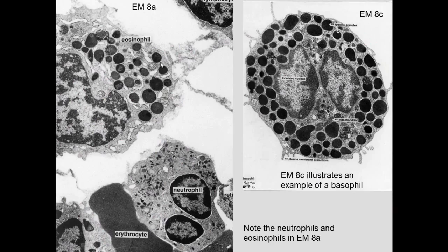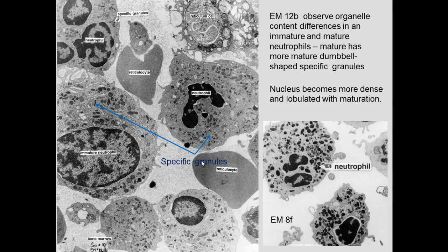Eosinophils have large granules with a crystalline core. Basophils are fairly large and also have large granules. Both have larger granules than neutrophils. Neutrophils have medium-sized granules and also dumbbell-shaped specific granules. In eosinophils and basophils, the large granules are the specific granules. These dumbbell-shaped specific granules can be seen in both immature and mature neutrophils.